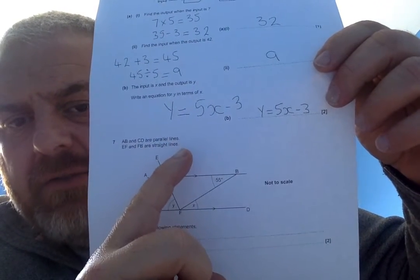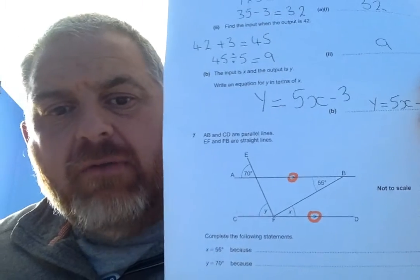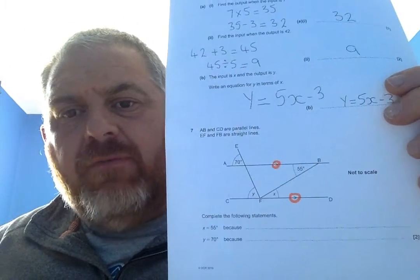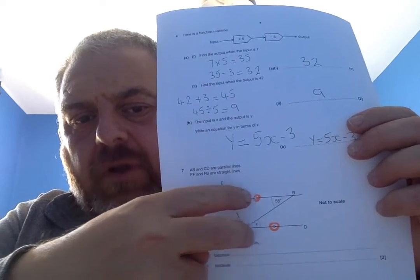Now, we're also aware of that because we've got the arrowheads. So, even if it didn't tell you that, you sometimes might have to see those and realise. That means these two lines here are train tracks. They're always the same distance apart.